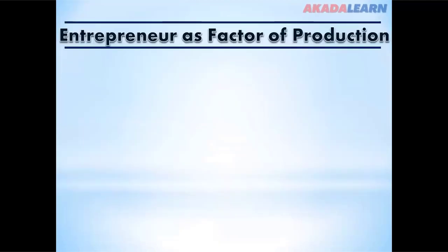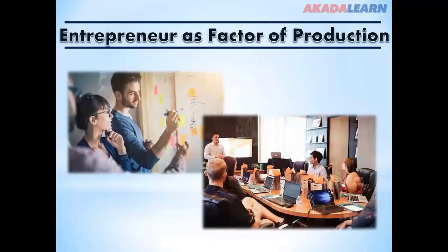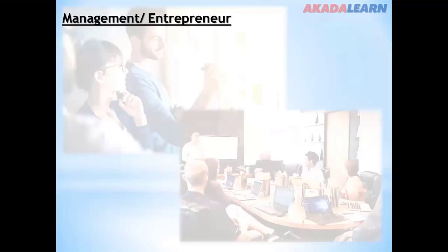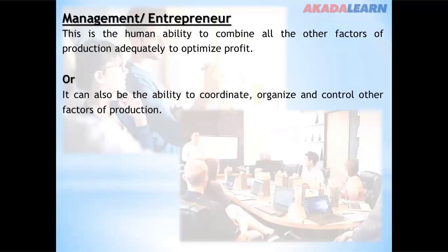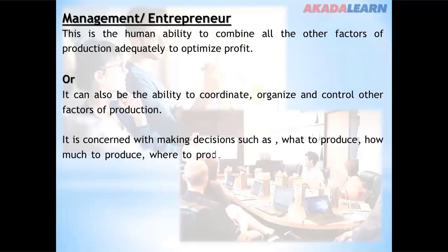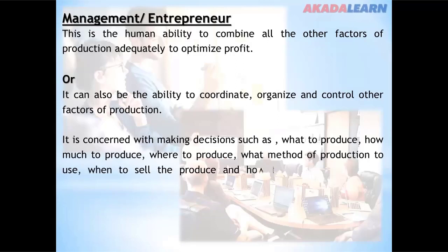Entrepreneur or management as a factor of production is the human ability to combine all other factors of production adequately to optimize profits. It is the ability to coordinate, organize, and control other factors of production. It is concerned with decisions such as what to produce, how to produce, where to produce, what method of production to use, when to sell, and how to sell what has been produced.